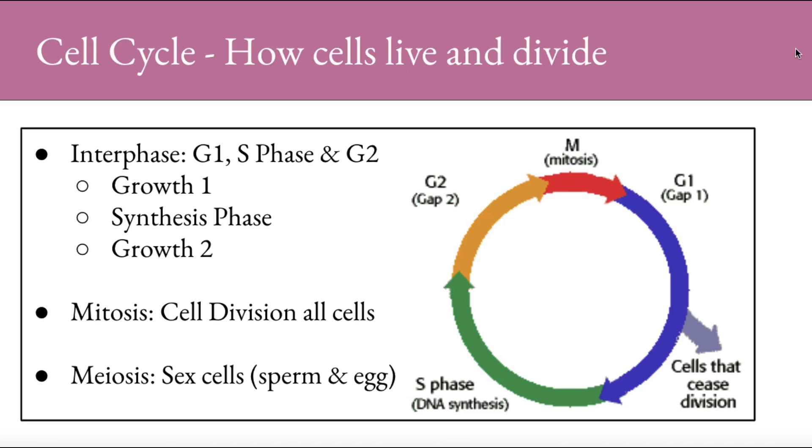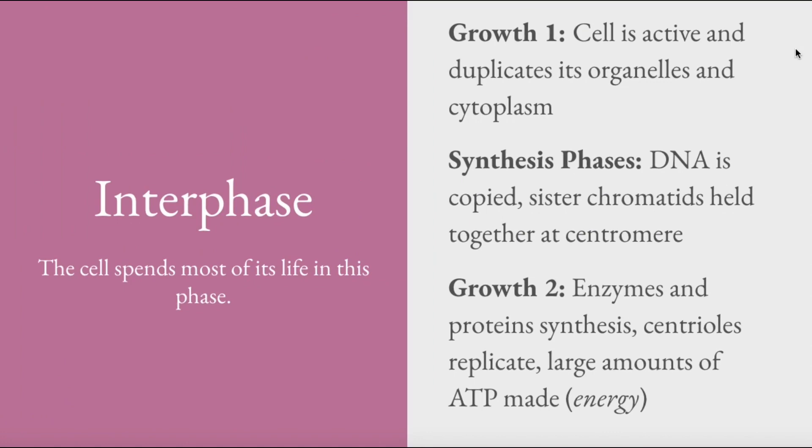Cells of the human body, as we just stated, go through mitosis unless it is a sperm or an egg in sexual reproduction. It goes through meiosis. Let's look at interphase. This is where the cell spends most of its time. In the first area called G1, or growth one, the cell is very active. It duplicates all its organelles and its cytoplasm before it enters the synthesis phase.